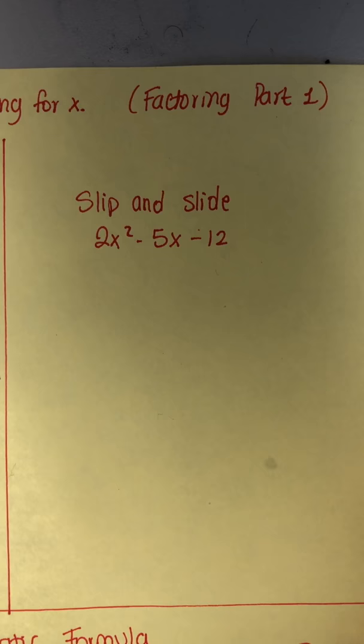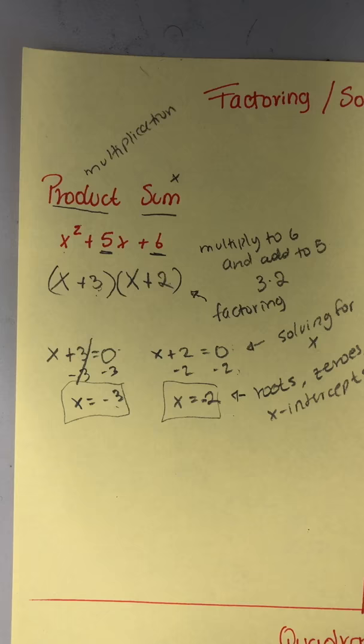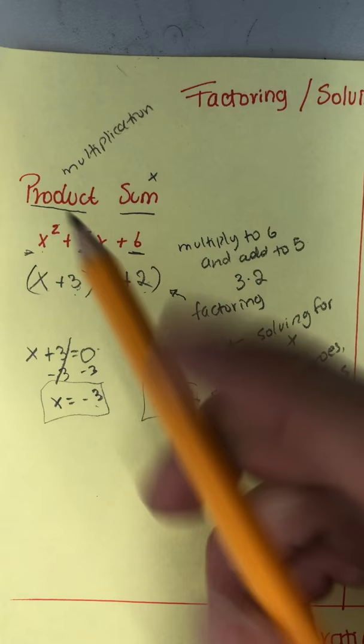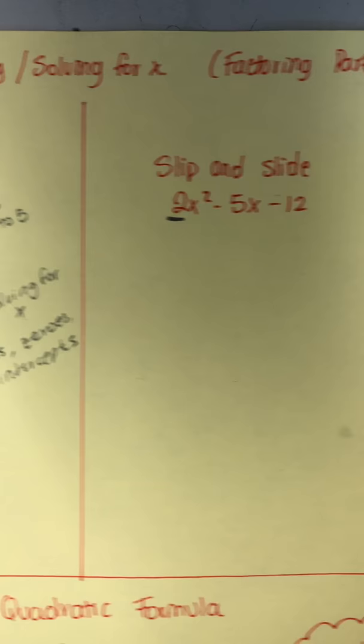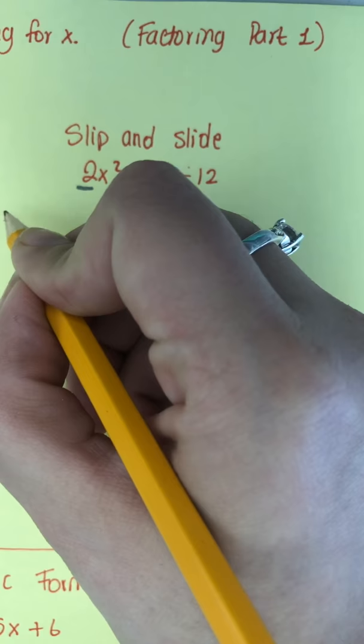The next one - I don't know if this is the actual name of it, but I like to call it slip and slide. This factoring method works when you have a number that's bigger than one in front of that x². In this case it was pretty easy because there was just a one in front, and that's when the product-sum works. Now in this one, not so much, because you have a two in front.